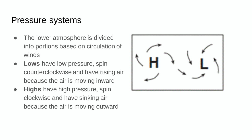The lower atmosphere, or troposphere, is divided into portions based on the circulation of winds, and these are called highs and lows. Lows are low pressure and they spin counterclockwise, with rising air because the air is moving in toward the center. The air rises, forms clouds, and this is what makes a rainstorm. High pressure is the opposite — it's sinking air radiating out from the center, spinning in a clockwise manner. This brings fair weather, so days when you see no clouds and it's a nice sunny day, chances are that's high pressure.